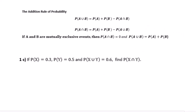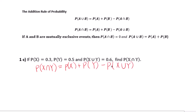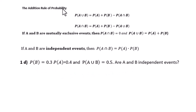Let's go to 1c. P(X) equals 0.3, P(Y) equals 0.5, and P(X∪Y) equals 0.6. Find P(X∩Y). Using the addition rule: P(X∩Y) equals P(X) plus P(Y) minus P(X∪Y). Substituting: 0.3 plus 0.5 minus 0.6 equals 0.2.